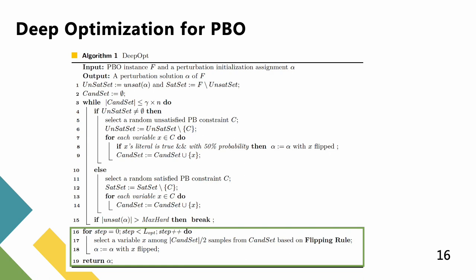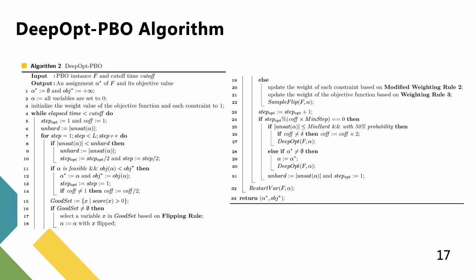The DeepOPT-PBO is mainly divided into the initialization and search phases. During the search, whenever a better feasible assignment is obtained, α* and OBJ* are updated accordingly. After each inner loop, the algorithm uses the restart(VR) function to restart the current assignment. Finally, the algorithm returns α* and OBJ* when reaching the time limit.